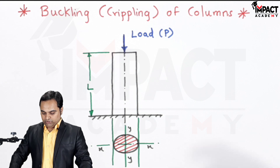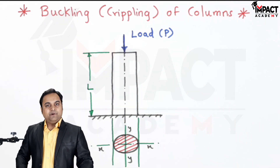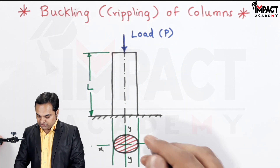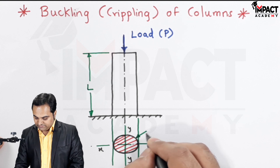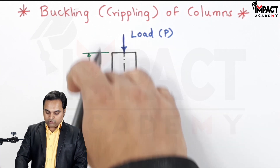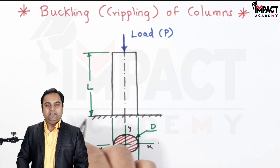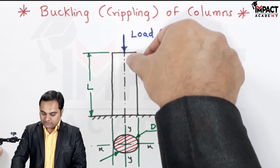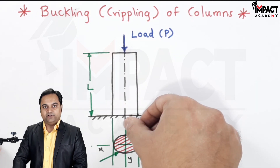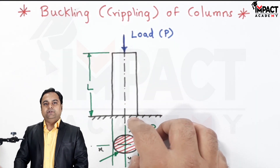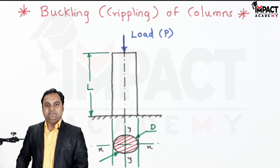Here there is a column. I am assuming it to be a circular column, that is the cross-section is circular having diameter capital D, and the length of the column is capital L. This column is subjected to an axial load as we can see from the figure.